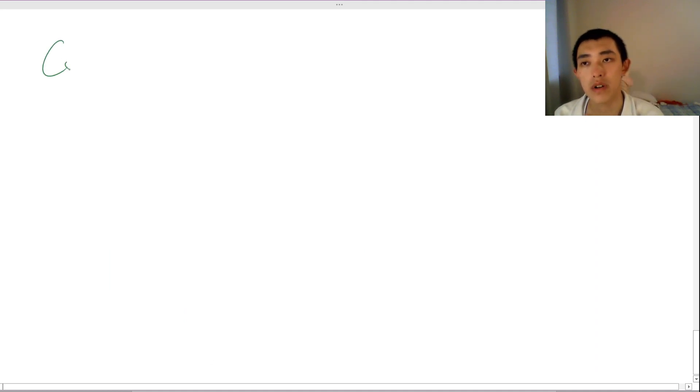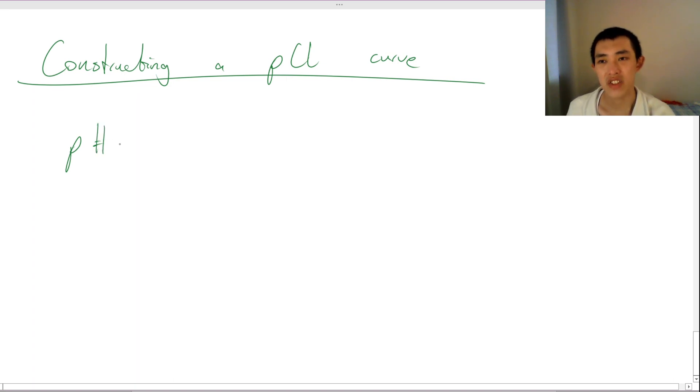Last part about this is constructing a pCl curve. Now what is a pCl curve? So remember what P is. P stands for the power of. So P is actually not just for pH, it's actually a general function.